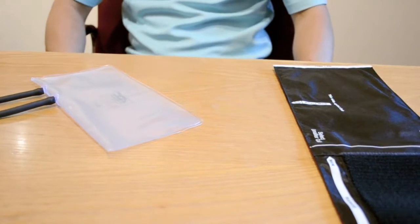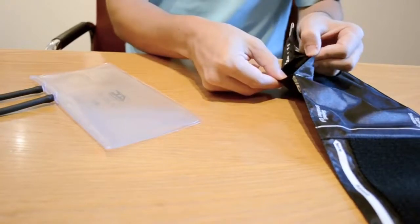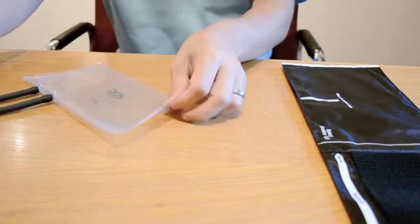To begin, place the cuff on a flat surface face down with the range markings on the left-hand side. Locate the opening on the top right-hand side of the cuff. It is here where you insert the bladder.